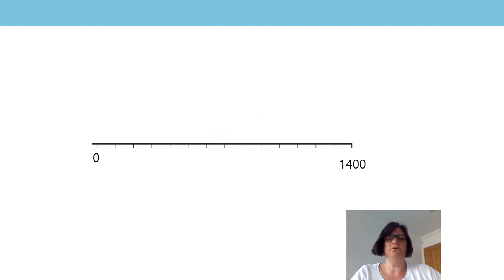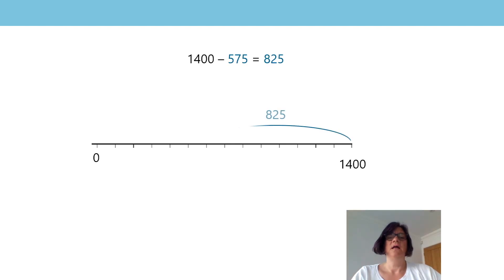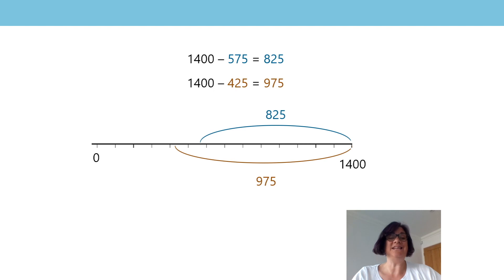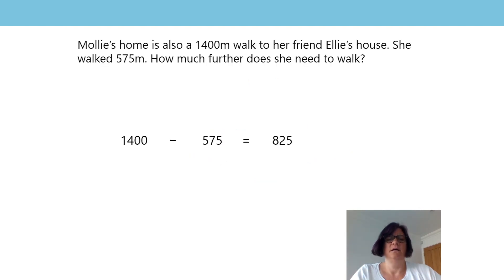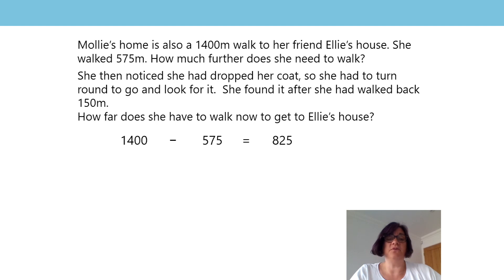If she walks back home to look for her coat, the distance represented by the subtrahend will decrease. The subtrahend will be 575 subtract 150. The subtrahend is decreased by 150, and the difference? That's right — it's increased by 150. I can show this with jottings too. Here's the equation representing the first part of Molly's journey, and then when she forgot her coat and had to go back, here are the jottings representing the second part of her journey.